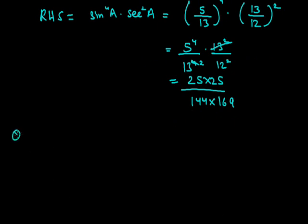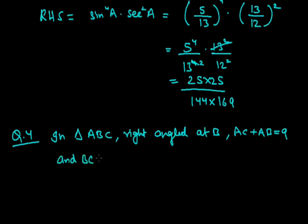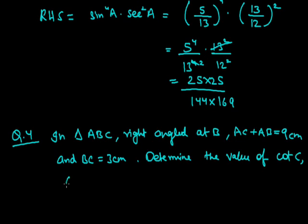In this way we can use trigonometry ratios for solving many questions. Now we will see few more examples. The question is: In triangle ABC, right angled at B, AC + AB = 9 cm and BC = 3 cm. Determine the value of cot C, cosec C, and sec C.